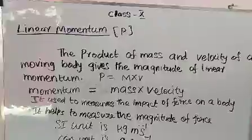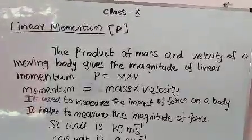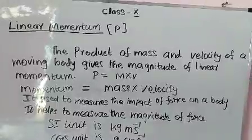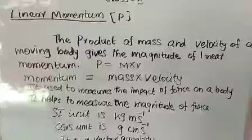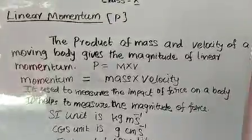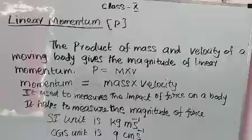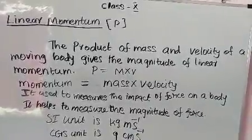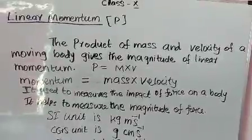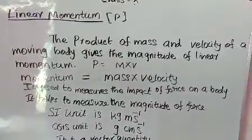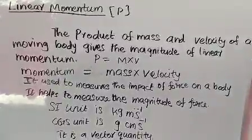Momentum is used to measure the impact of force on a body or the magnitude of force. The SI unit of momentum is kilogram meter per second (kg·m·s⁻¹). Mass unit is kilogram, velocity unit is m·s⁻¹, so momentum SI unit is kg·m·s⁻¹. In CGS units, it is gram·centimeter·s⁻¹.